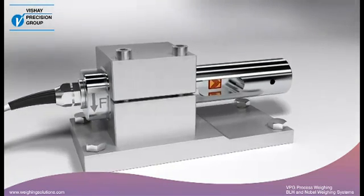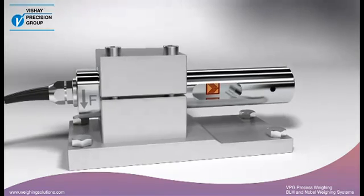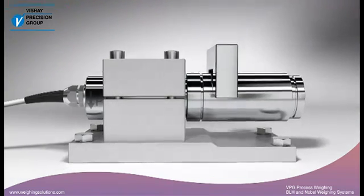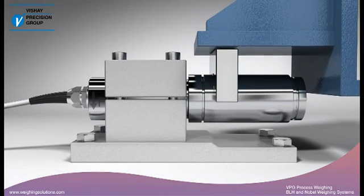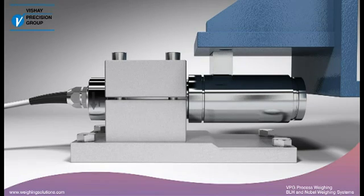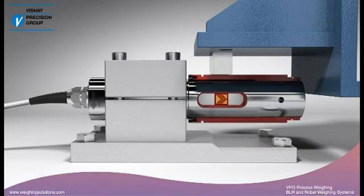The KISS load cell has a circular and symmetrical measuring element. It also has a sleeve which fits concentrically over the measuring element. This sleeve is the key to the KISS principle and was patented by BLH and Nobel Weighing Systems.